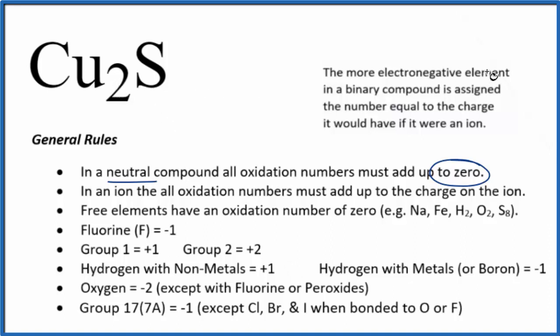We can, though, look here at this other rule that says the more electronegative element in a binary compound, this is a binary compound, will have a charge. Its oxidation number will be equal to the charge if it were an ion.